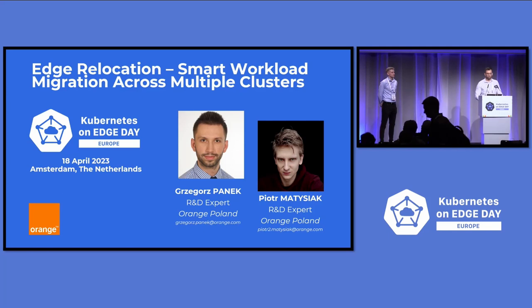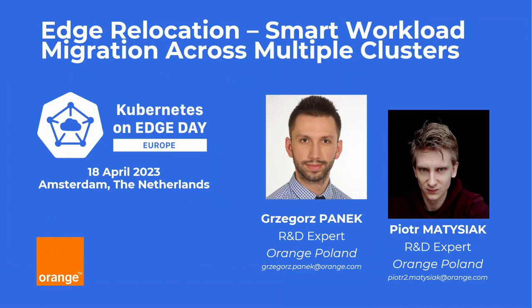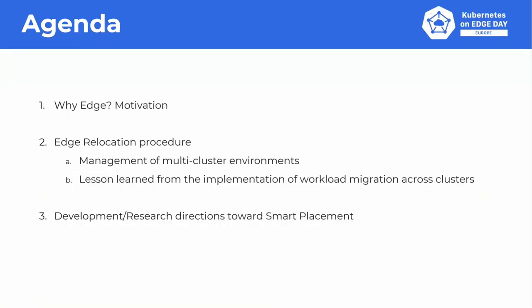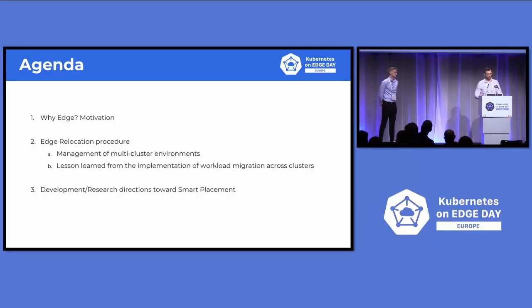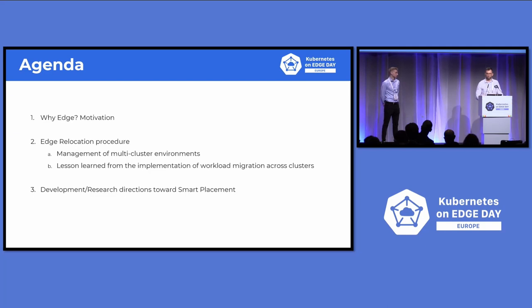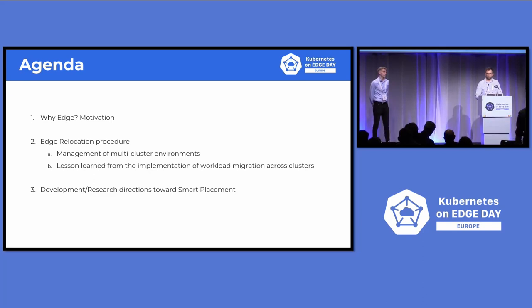We are going to talk today about the seamless migration of cloud-native workloads across multiple edge clusters and multiple edge servers. First, I will give some motivation on how we see the edge and why we care about it. Then Piotr will give a deeper view on the technical details of how we manage multiple clusters and implement the edge relocation procedure. Finally, I will share notes on the future research direction of our project.